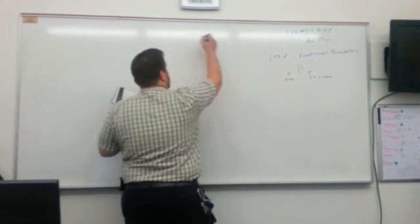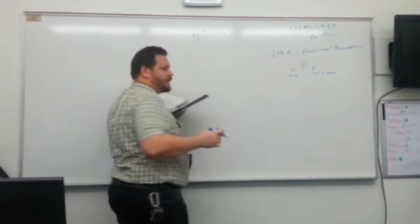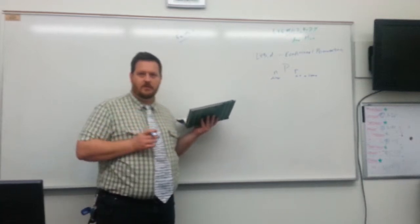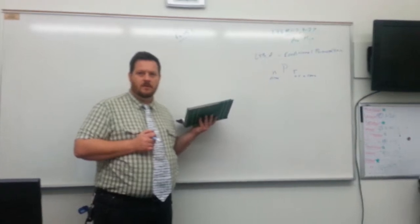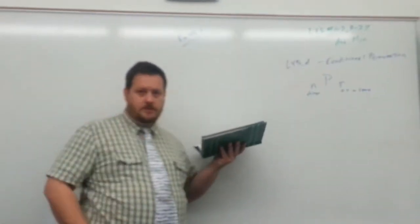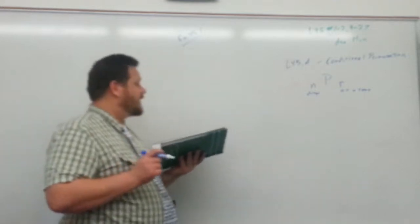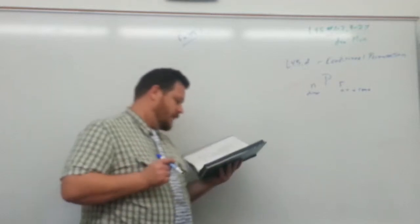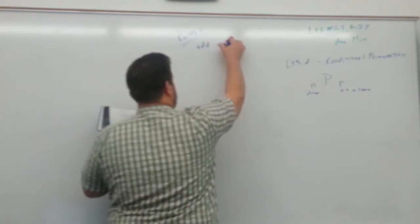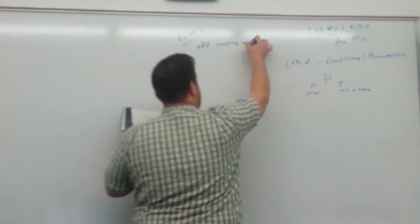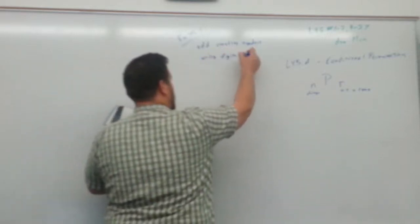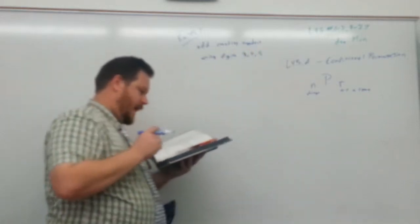Let's walk through a few examples. We're still going to use the procedure of writing boxes and filling them in, then multiplying to get our answer. So 45.1: How many odd counting numbers can be formed using the digits 3, 4, and 5 with no repetition?